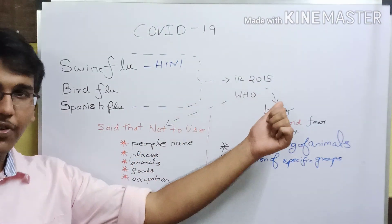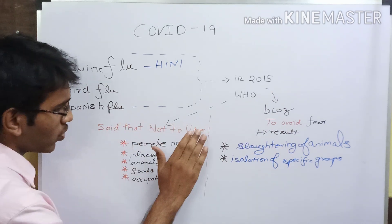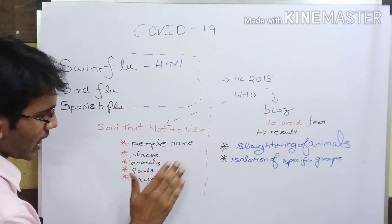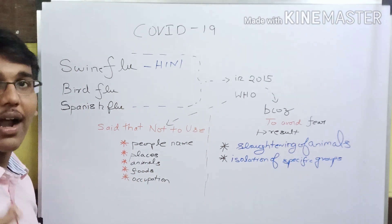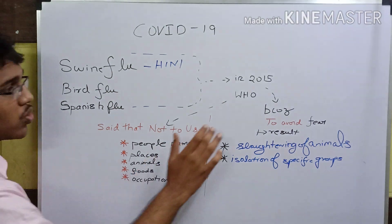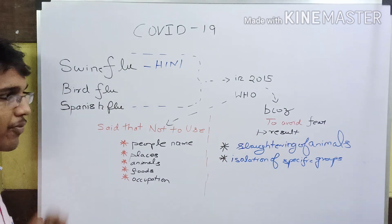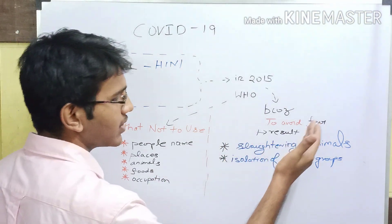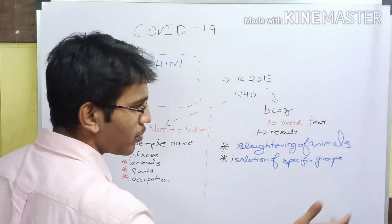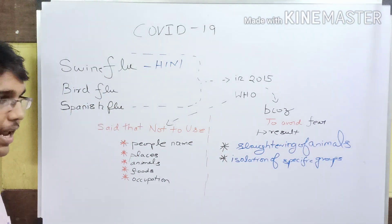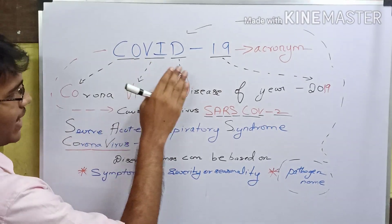Because in 2015, the World Health Organization said not to use people's names, place names, animal names, food names, or occupational names to name a disease — to avoid fear. As a result of that fear, it may provoke unwanted slaughtering of that animal species and isolation of a specific group of people on whose name the disease is named.